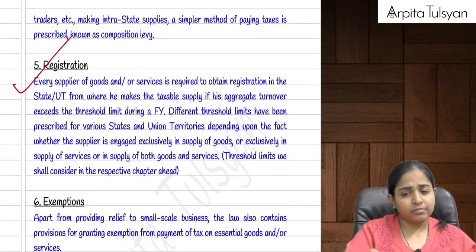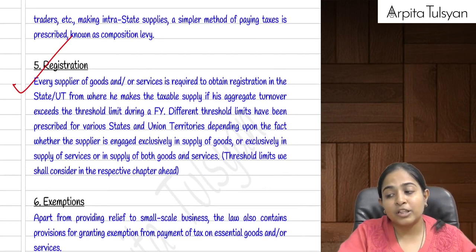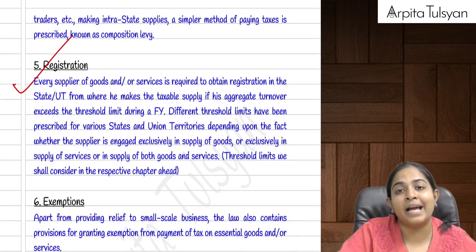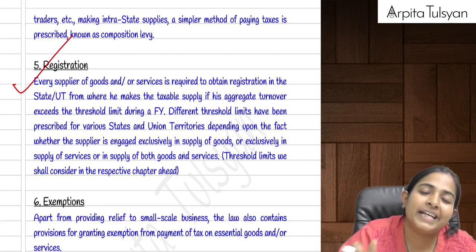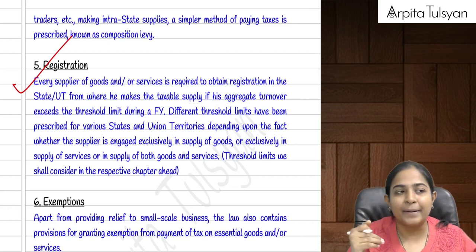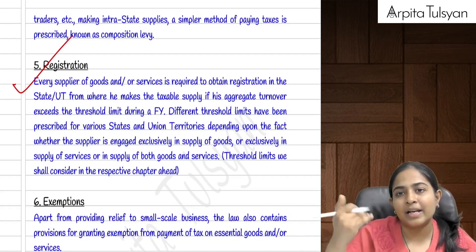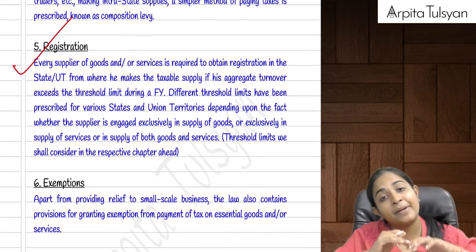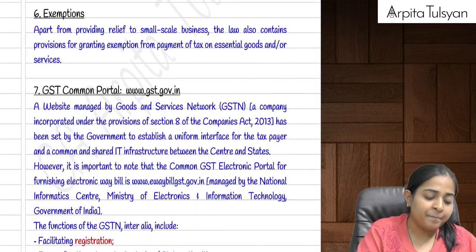Any person who wants to come under GST has to get registered. For the purpose of registration there should be some limit — just making a sale of Rs. 5,000 doesn't make you liable to register under GST. In a particular year an aggregate threshold turnover limit of GST should be met; only if that aggregate turnover limit is achieved does one become liable to get registered under GST.